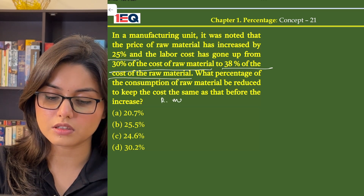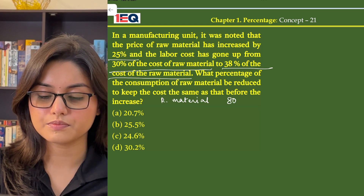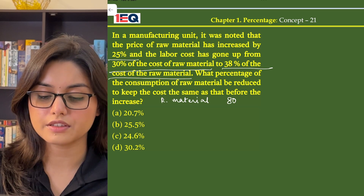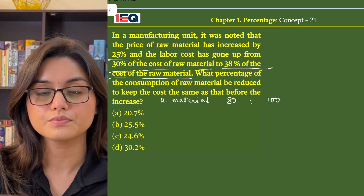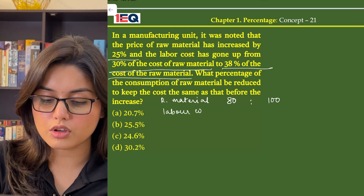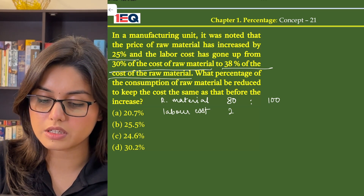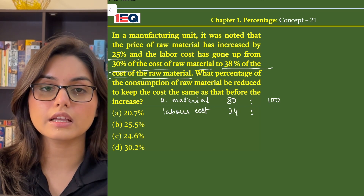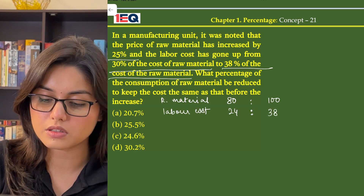Let's assume that the cost of raw material was 80 initially, and then it was increased by 25%. So the price is increased by 25% and is 100 rupees now. Labor cost, on the other hand, was 30% of the cost of raw material — 30% of 80 is 24 — but now it has been increased to 38% of the cost of raw material. So, 38% of 100 will be 38 rupees.